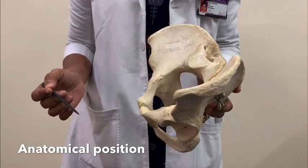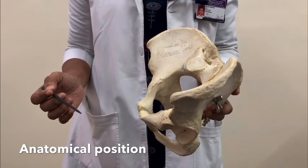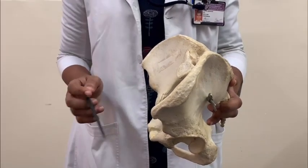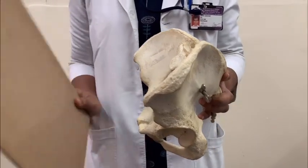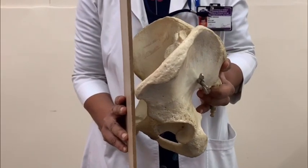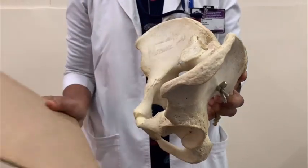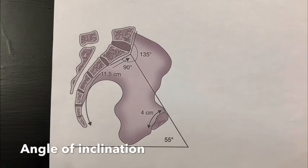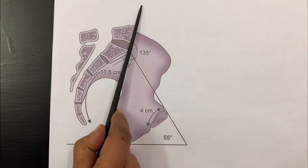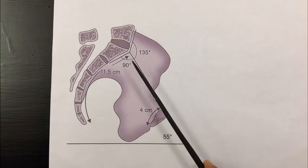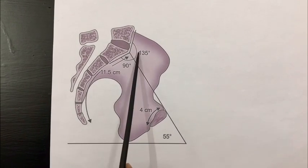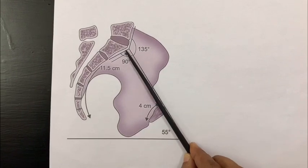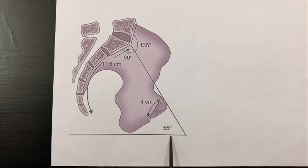In the anatomical position of the pelvis, when a patient stands upright, the anterior superior iliac spine and the pubic symphysis are in the same straight line. The angle of inclination is the angle made by a line passing through the front of L5 vertebra and the plane of the inlet, which is around 135 degrees. It can also be defined as the angle made by the plane of inlet with the horizontal, which is 55 degrees.